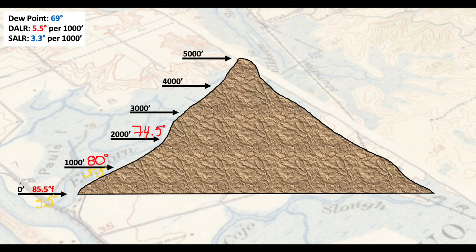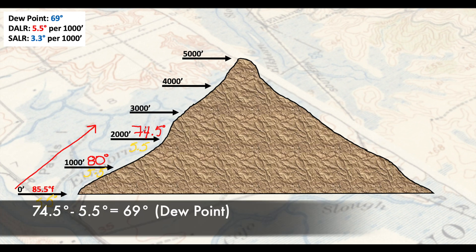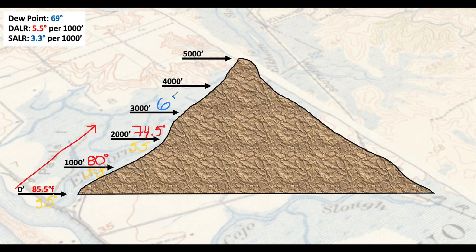Using the red DALR numbers, the air continues to be dry but cools by 5.5°F per 1,000 feet. Going from 2,000 to 3,000 feet, I subtract 5.5 from 74.5, which gives me 69.0°F. At this point I have just reached dew point. From here on upward, I must use the saturated adiabatic lapse rate — no exceptions once you hit dew point.